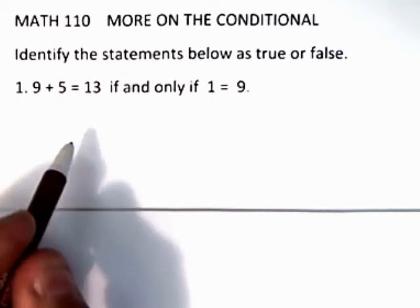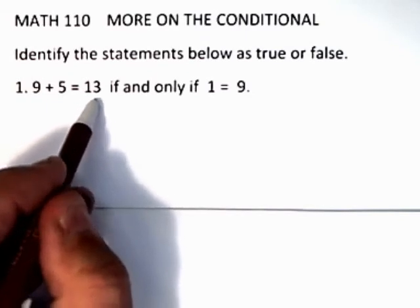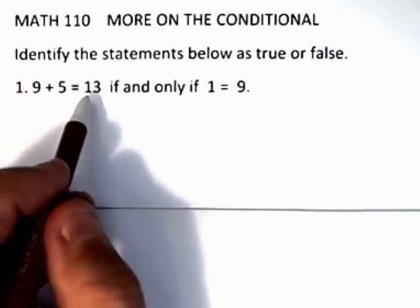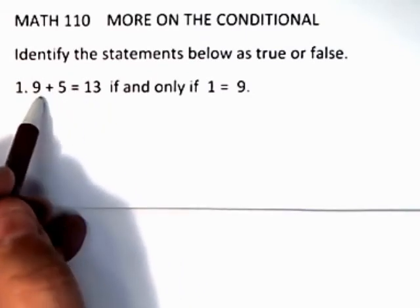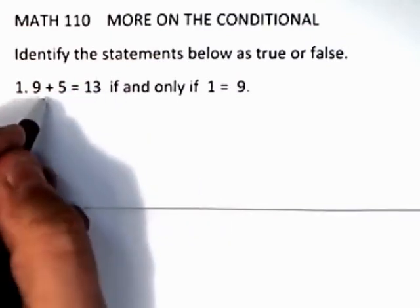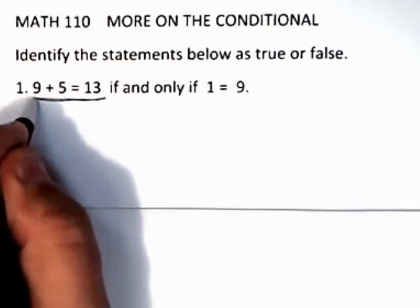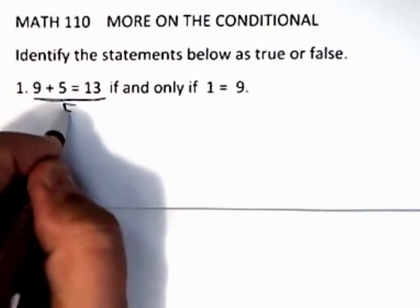The first thing you need to do is decide which of these statements is actually true and which is false, or what they are. 9 plus 5 is 14 and is not 13, so that statement is false.